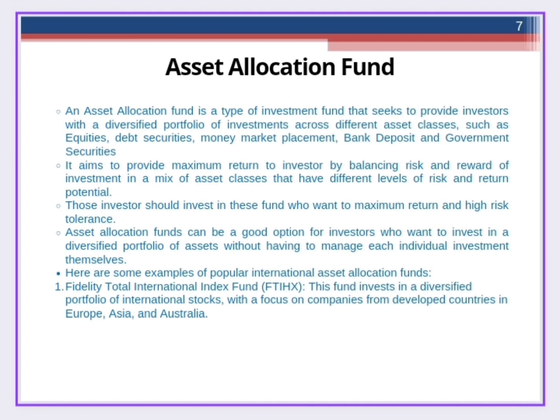What is asset allocation fund? Asset allocation fund is a type of investment fund that invests in equity securities, debt securities, money market securities, and government securities. It gives maximum return to investors by balancing risk and reward across a mix of asset classes that have different levels of risk and return potential. It is good for those investors who want maximum return and can bear high risk tolerance, and it is a good option for those who want to invest in a diversified portfolio without managing individual investments.